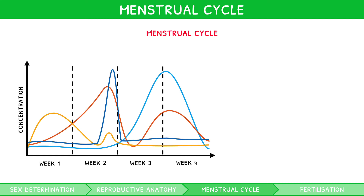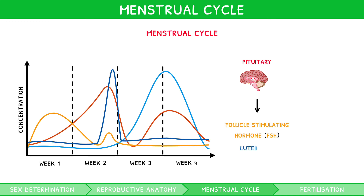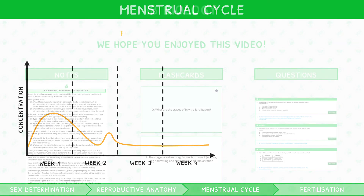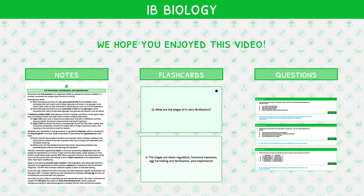There are four key hormones: two produced by the pituitary gland in the brain, named follicle-stimulating hormone and luteinising hormone, and two produced by the ovaries, oestrogen and progesterone. Let's look at each one now. You've now reached the end of the preview for this IB science video. If you want to check out the full video, head over to our website and select a membership plan today.